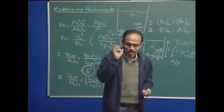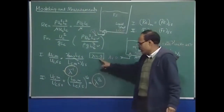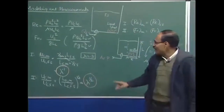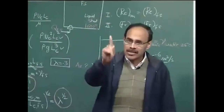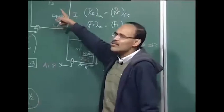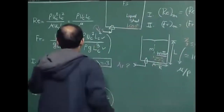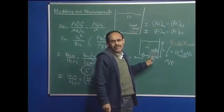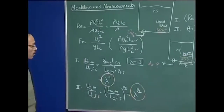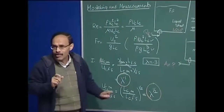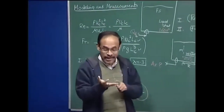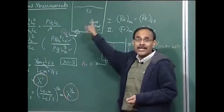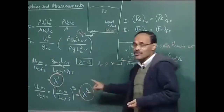We make a very important deduction: in reduced-scale modeling, both these conditions can be respected simultaneously only for one single value of λ, and that λ is equal to unity. So only in a full-scale model using the same fluid can both Reynolds and Froude similarity be respected simultaneously. Alternatively, in reduced-scale modeling employing a fluid with the same kinematic viscosity as the full-scale system, it is impossible to satisfy both Reynolds and Froude similarity simultaneously.